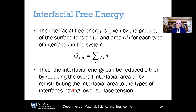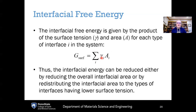The interfacial free energy can be described by the product of the surface tension gamma — the free energy per unit area — multiplied by the area of the interface A. This gives the total amount of free energy associated with that particular interface.